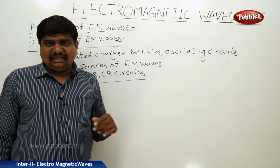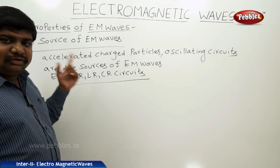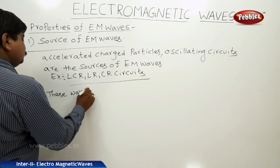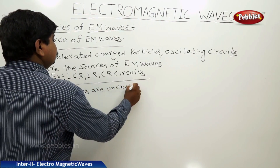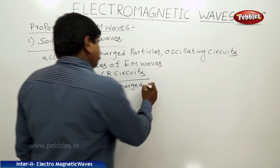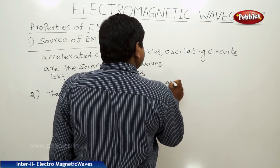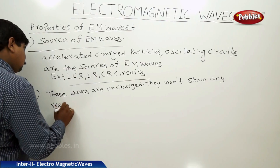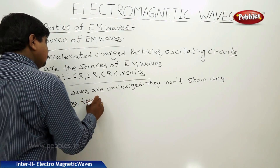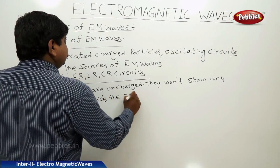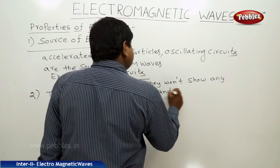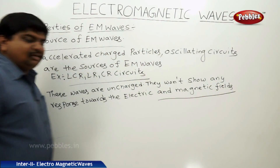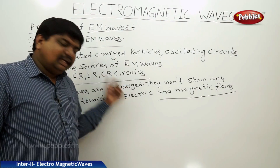These electromagnetic waves are not charged particles. That is why they are not deflected or attracted towards electric and magnetic fields — these waves are uncharged. Without any deviation, electromagnetic waves can pass through electric and magnetic fields.